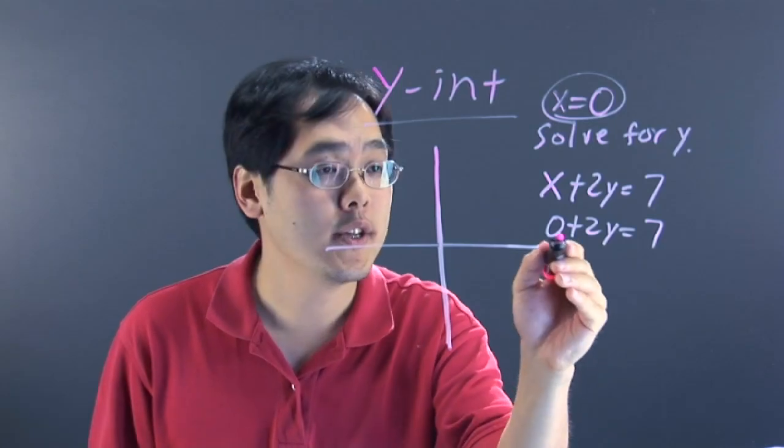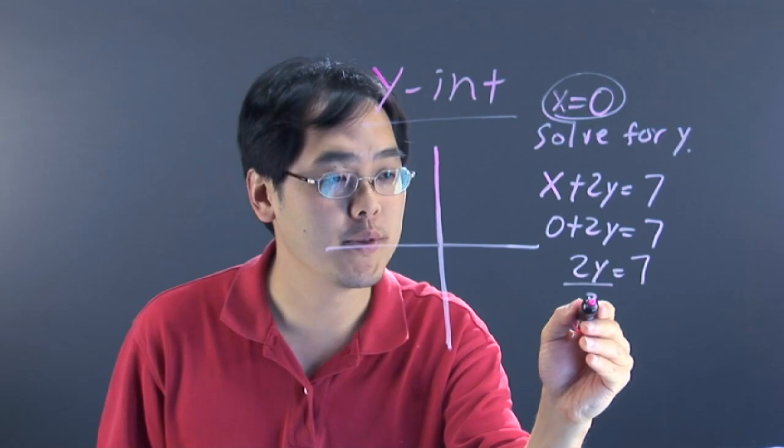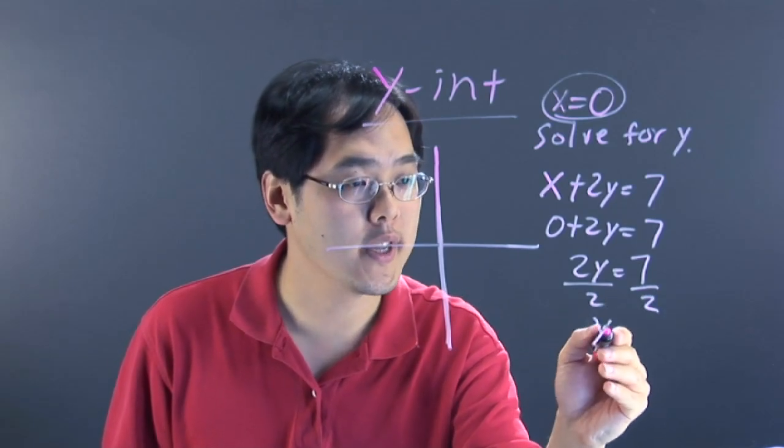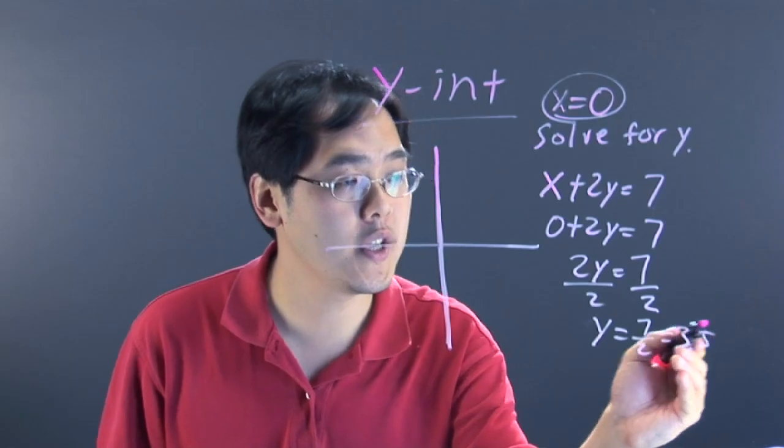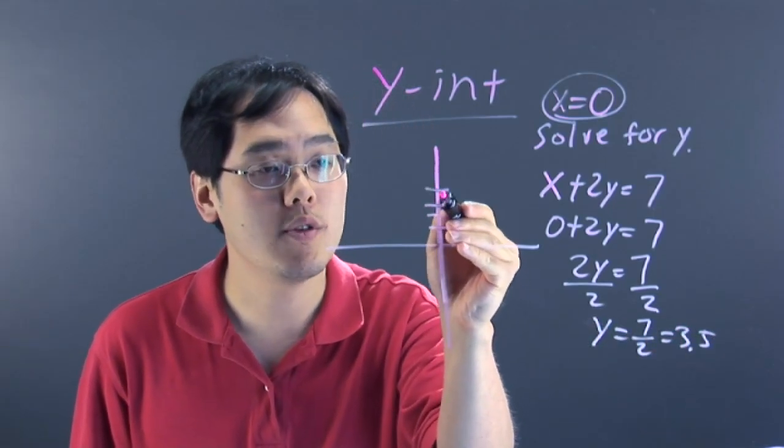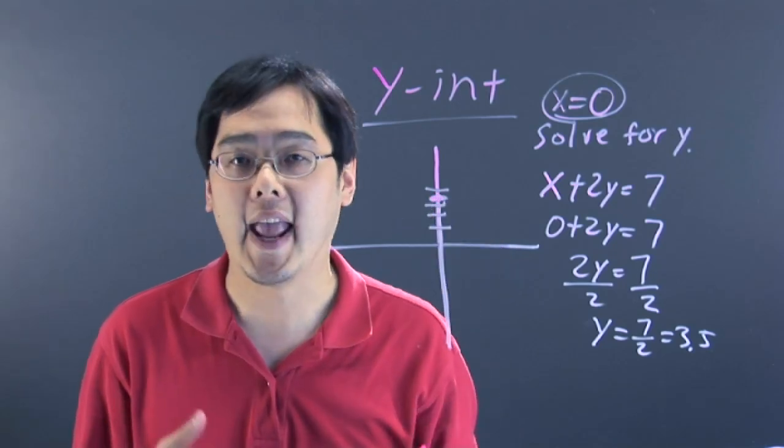So you have zero plus 2y is equal to 7. And then you just solve for y. So zero plus 2y, you have 2y equals 7. Divide both sides by 2, and you have y is equal to 7 halves, which is equal to 3.5. So what that means here is to graph it, you know that the point is directly in the middle between 3 and 4.